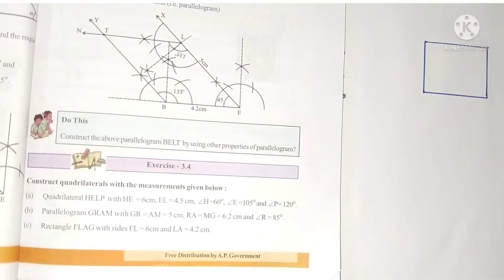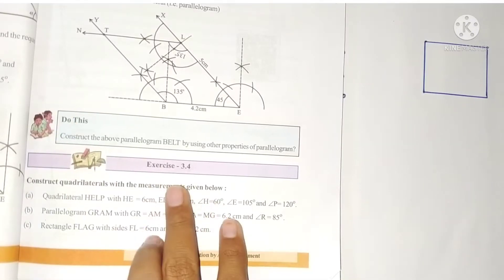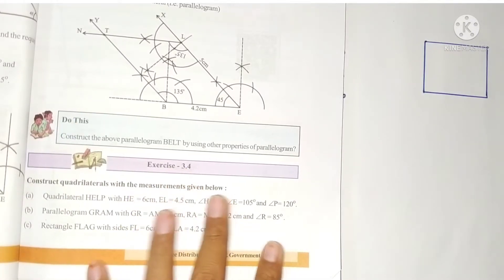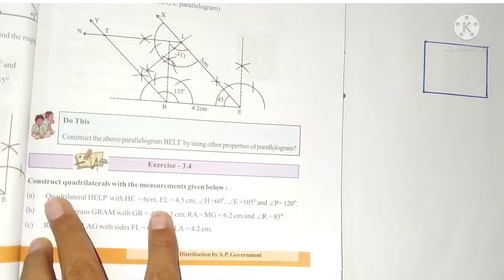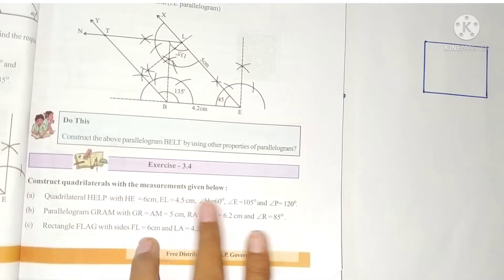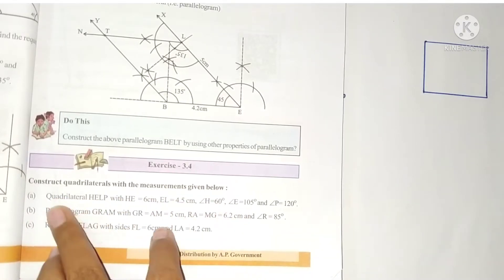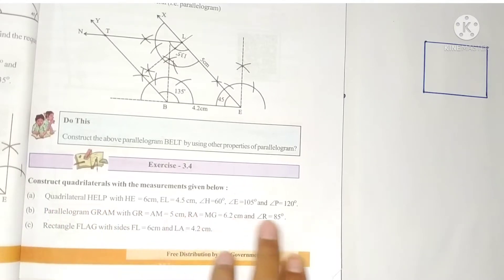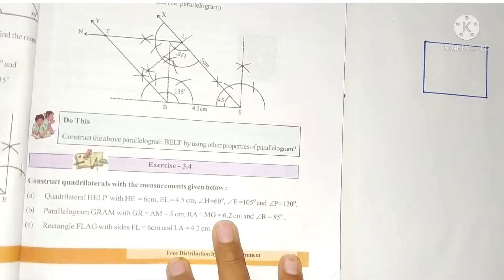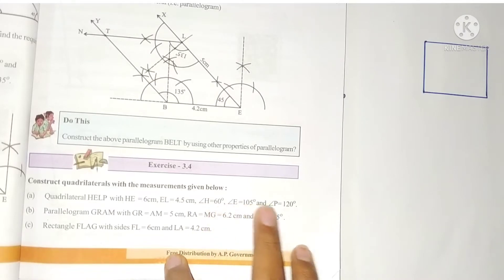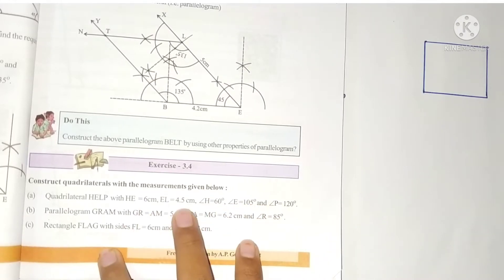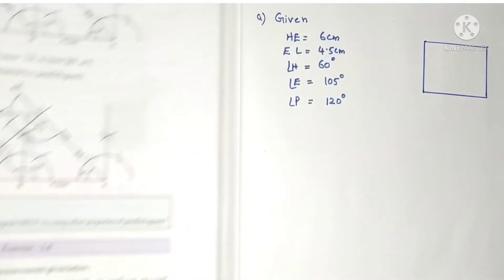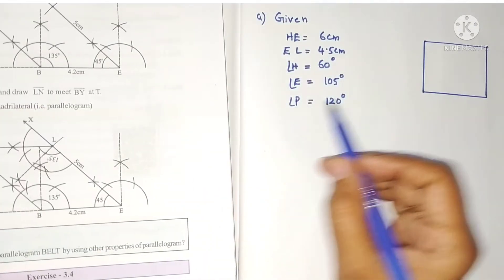Hello students, welcome to my channel. In this video we are going to see exercise 3.4 problems. Here we construct quadrilaterals with the measurements given below. Three angles and two sides are given, and we have to construct the quadrilateral. Let us first write the given measurements and draw a rough diagram.